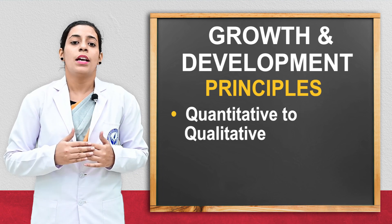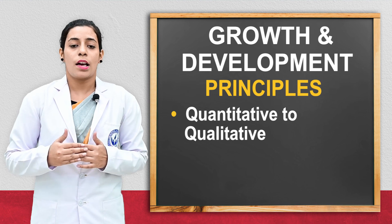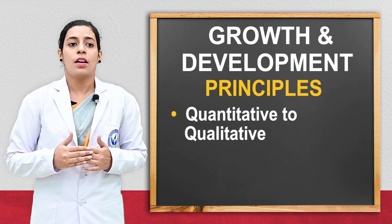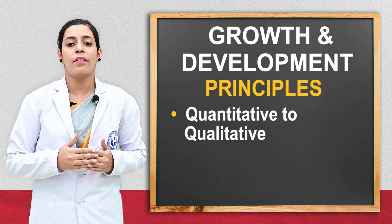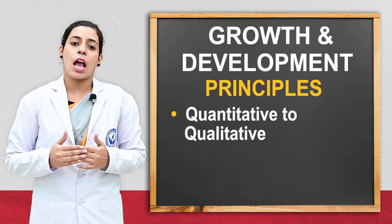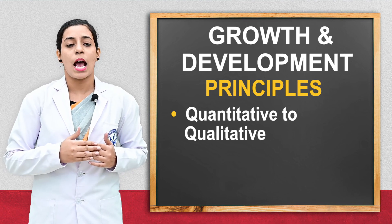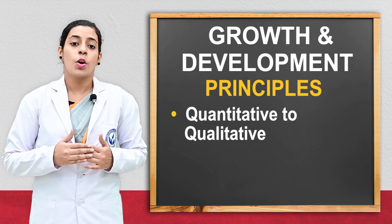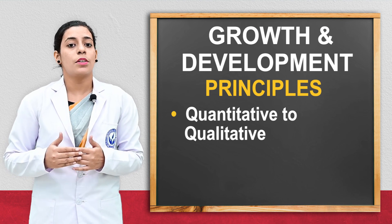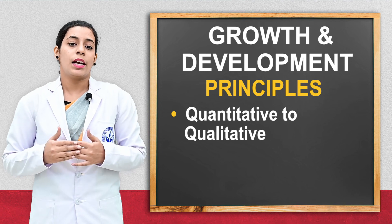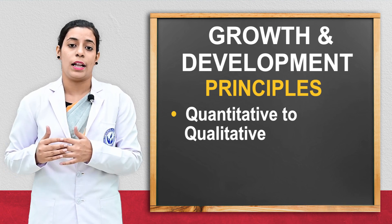The next principle is that early development affects later development. If the child has good nutrition at the prenatal and postnatal time, it will result in good health at a later age — what happens at the primary level will impact the later stage of life.